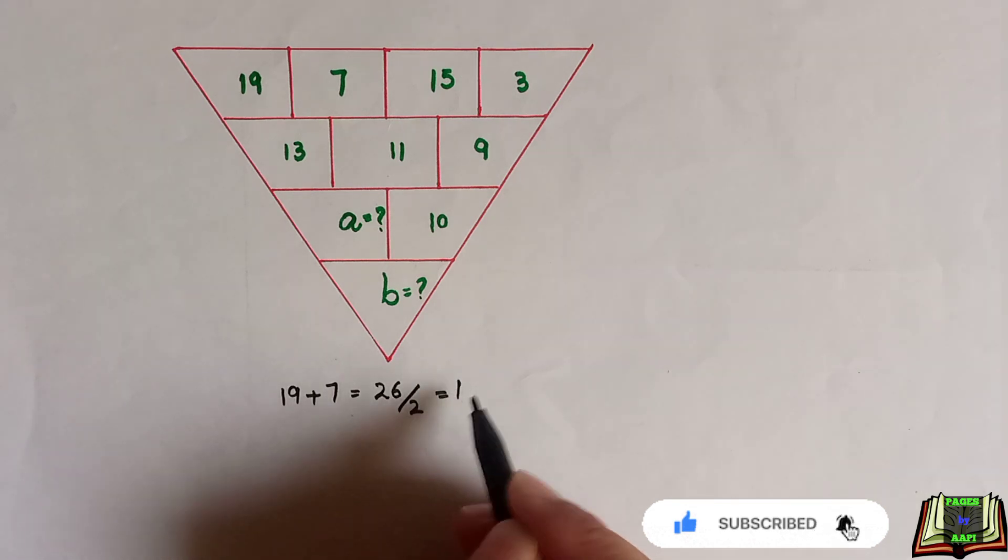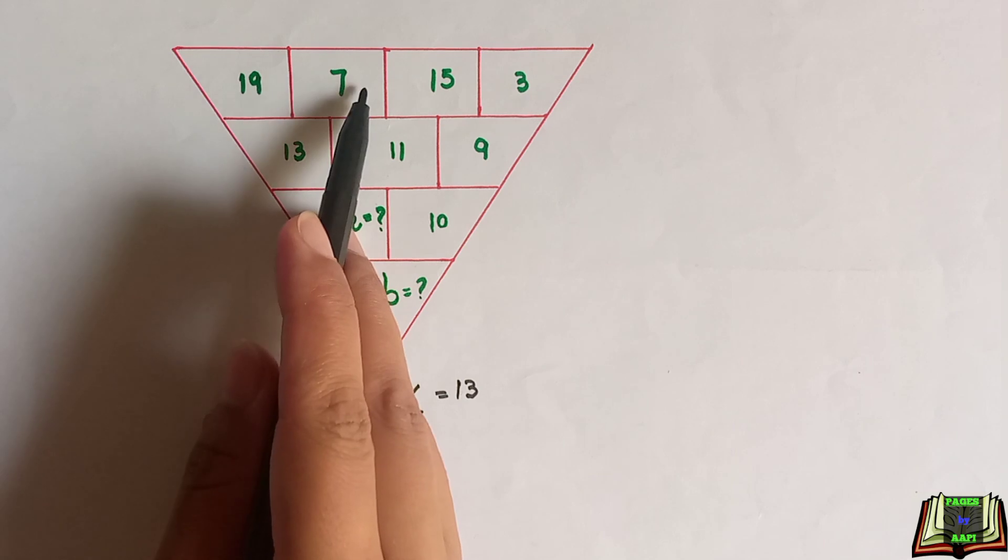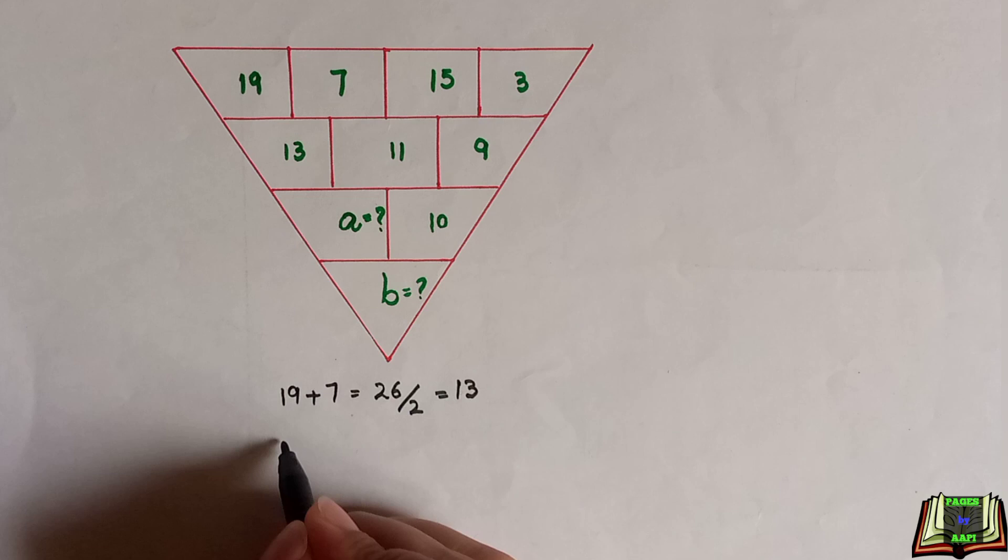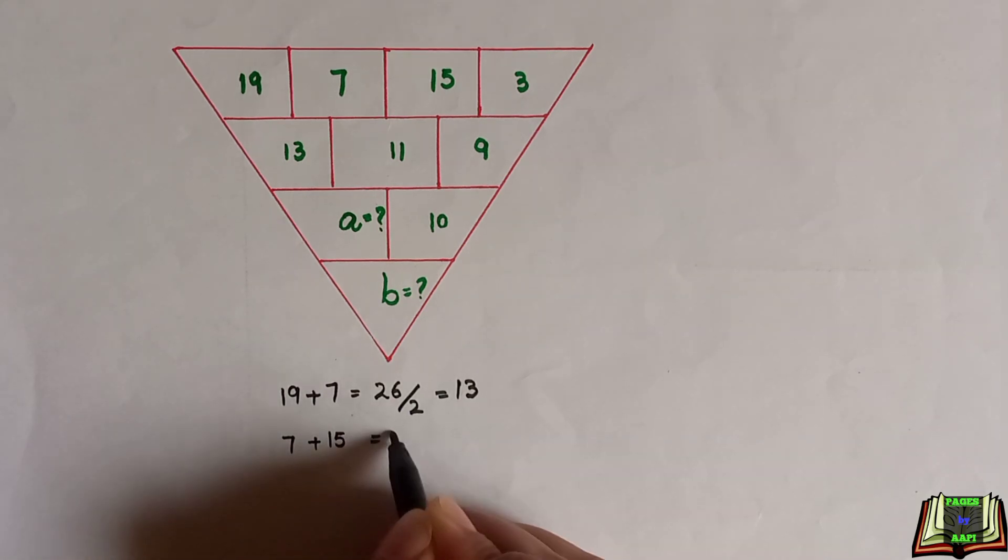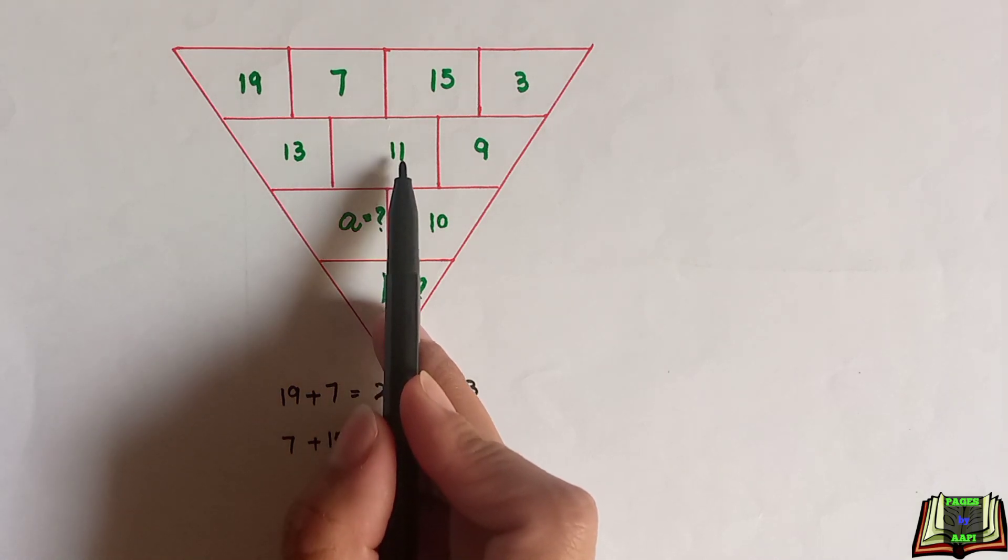We got 13 after adding and then dividing by 2. Now we will check the next number. We will add 7 and 15. 7 plus 15 equals 22. Then we divide it by 2, which equals 11. So 11 is obtained with the same pattern.